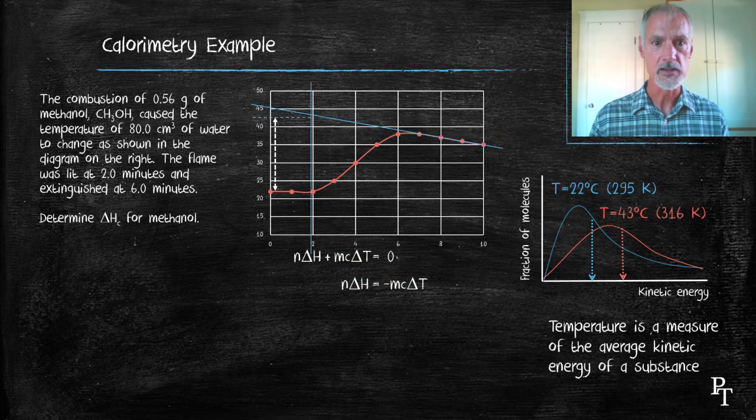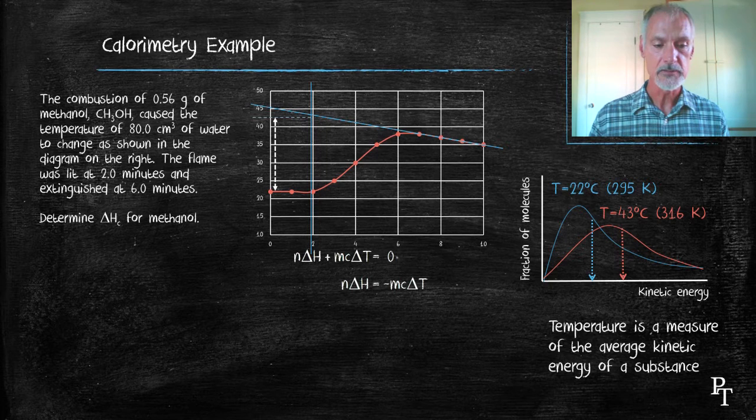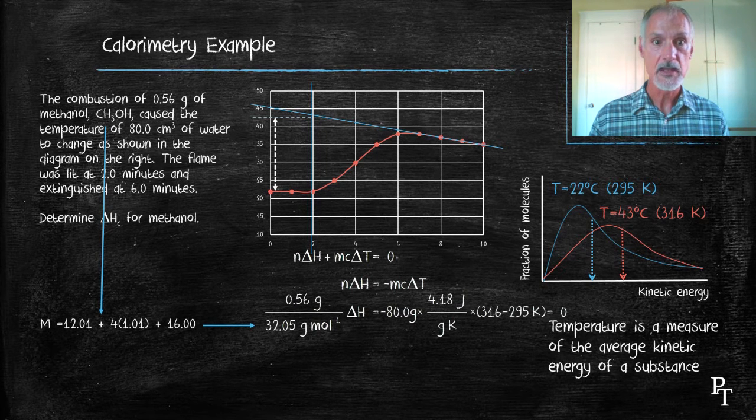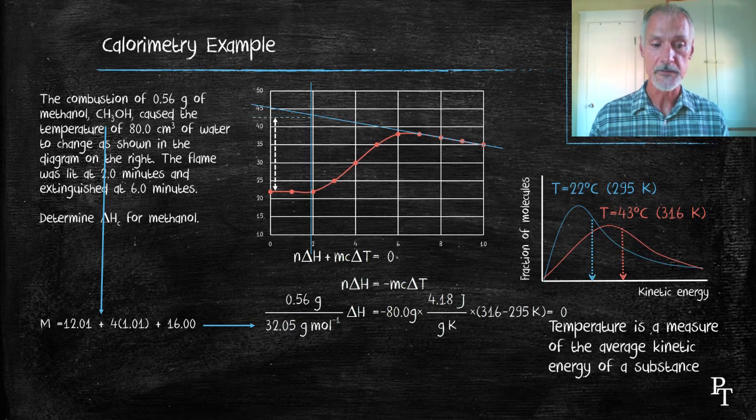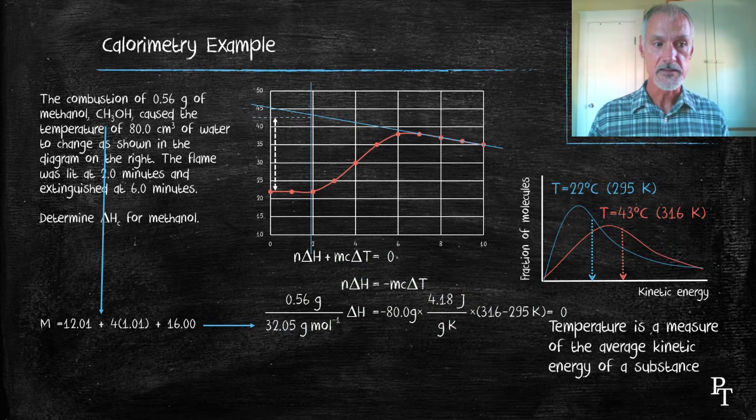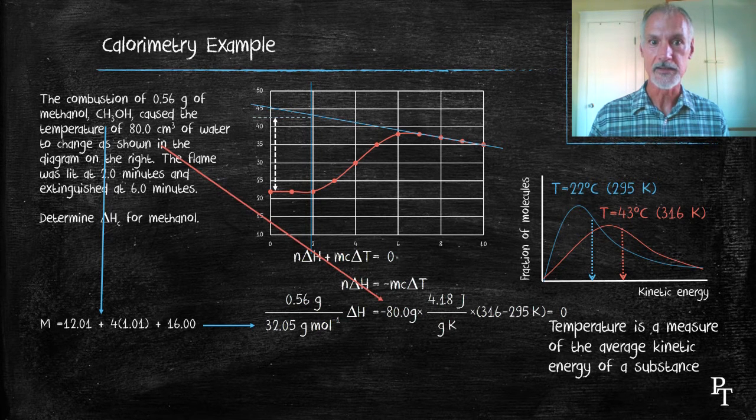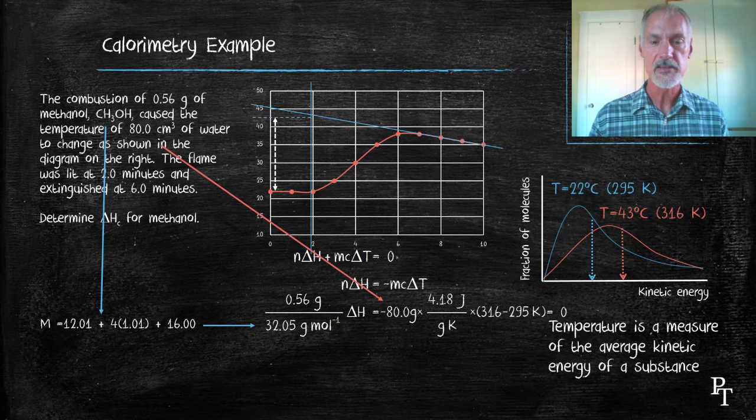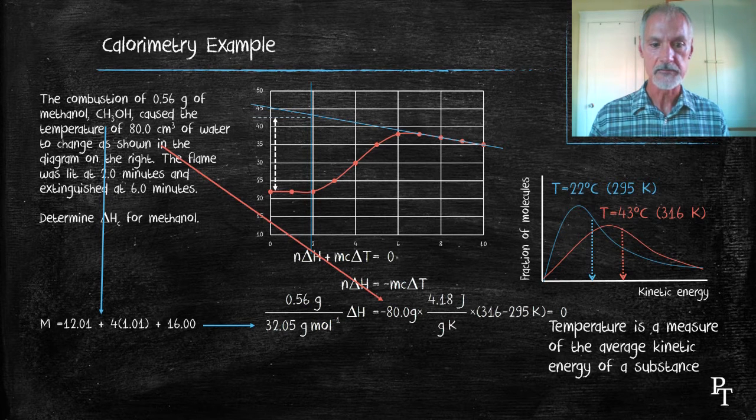Let's go back now to our equation and substitute in some of the values. So for my reacting system, I have 0.56 grams and the molar mass of methanol, which I can determine from its formula. To get the mass of water, because it's water, its density is 1. So 80 cubic centimeters is the same as 80 milliliters. And the temperature change I can get from my graph.